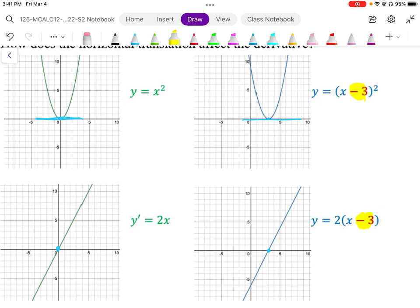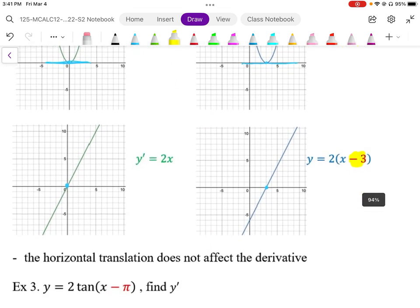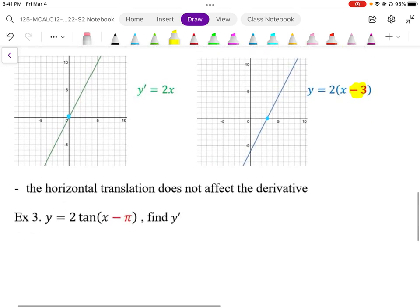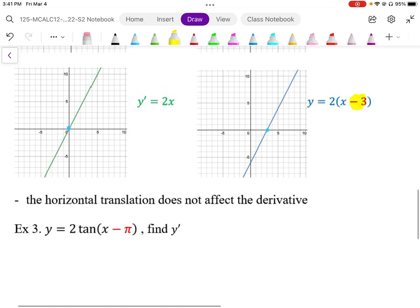The horizontal shift doesn't change the shape, so it doesn't affect the actual differentiation, but we do have to keep track of that in our derivative. So in general, then, the horizontal translation does not affect the derivative. We just have to keep track of it.